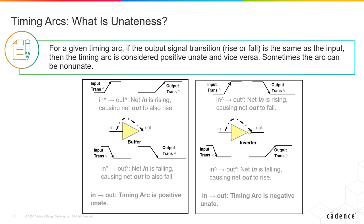So, for a buffer, you can actually say it's going from 0 to 1, and the output is changing from 0 to 1 at the same time. So that gives you clues into how to determine the u-nateness of each individual timing arc in certain cells that are multiple inputs. We have to look at each timing arc to determine what the u-nateness of that particular timing arc is.